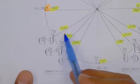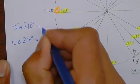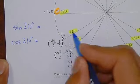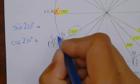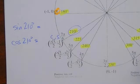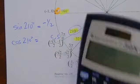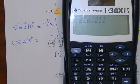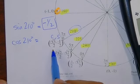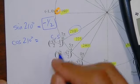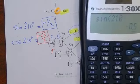Let's go to 210 degrees. Give me sine of 210 and cosine of 210 — the exact values are right there. Remember, the first coordinate is cosine and the second is sine. Sine of 210 is negative one half. Let me check the calculator — sine of 210. There it is. And cosine of 210 is negative root 3 over 2, because it's right there.